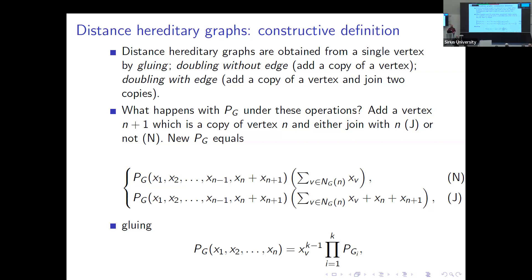Thank you very much. I would like to ask about the operation of adding a copy of a vertex: do you mean you take a vertex v and add a new vertex v' which is joined to the same vertices as v — and the question is whether to also join v' to v itself? Yes, exactly — that's the distinction between the two twin operations.